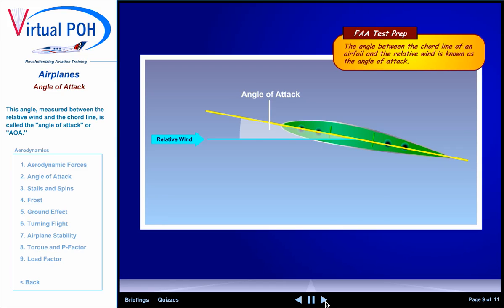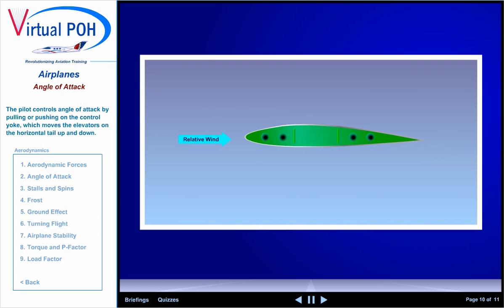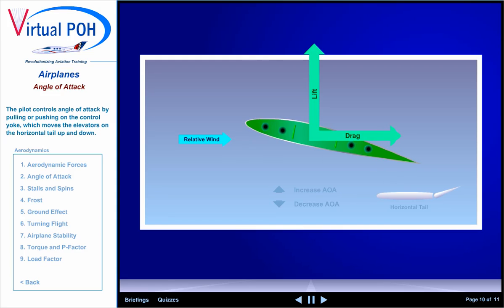The pilot controls angle of attack by pulling or pushing on the control yoke, which moves the elevators on the horizontal tail up and down. Increasing the angle of attack increases lift. It also increases drag.